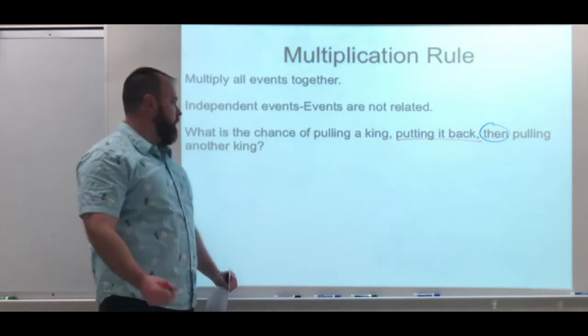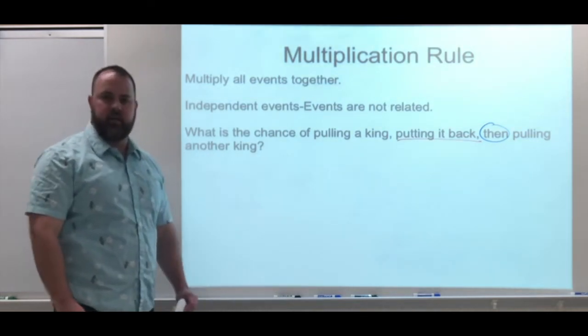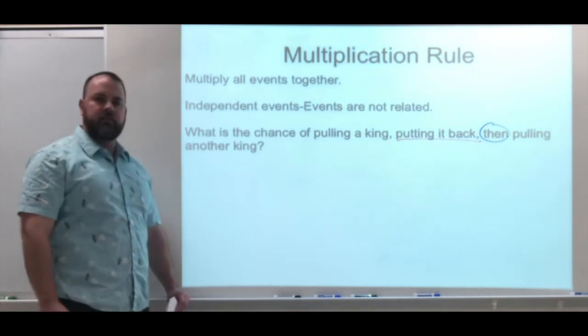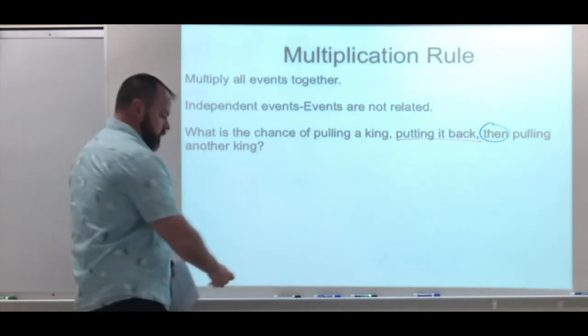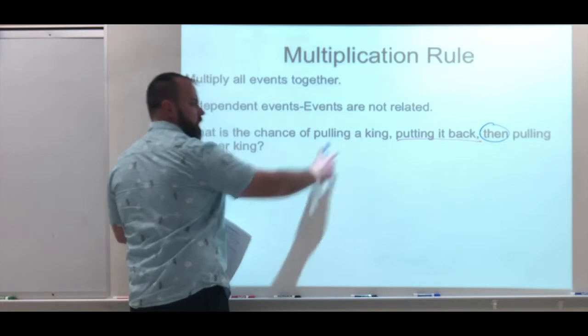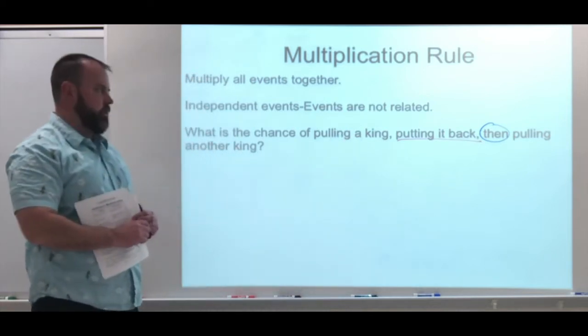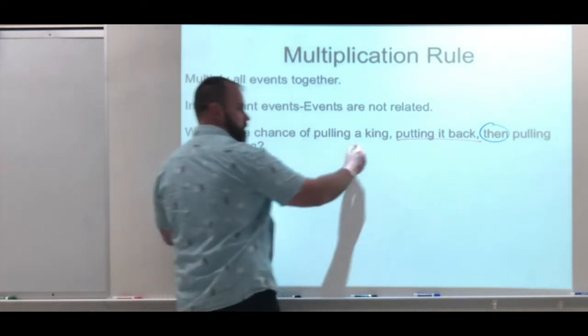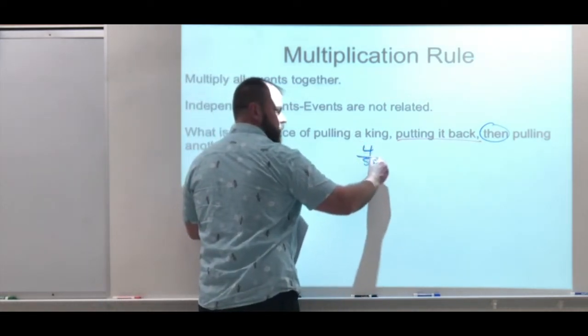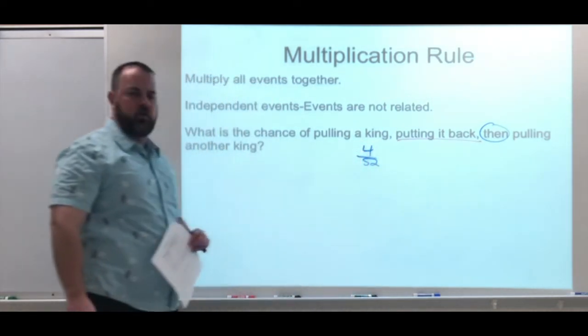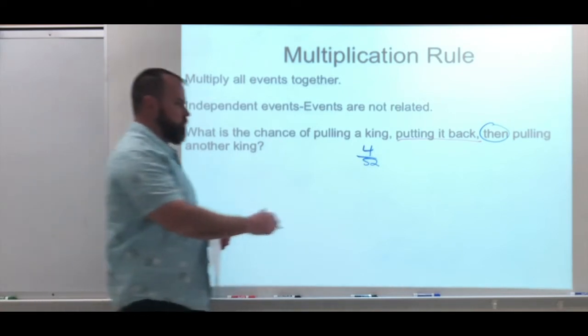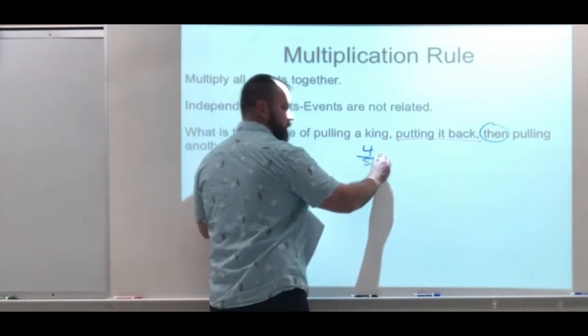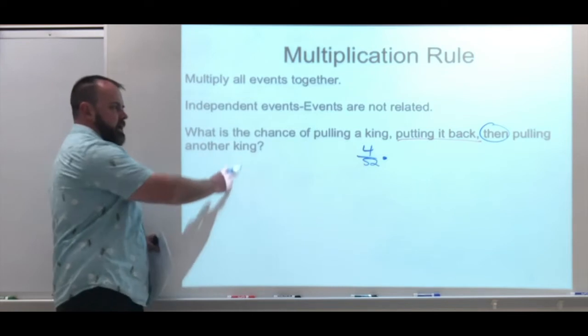You got a king the first time, you put it back in, there's four kings still in that deck. So this is going to be considered an independent event. So I'm going to look at my two events. We have pulling a king. So just like for the addition rule, I'm just going to set these up. Pulling a king is four out of 52. Four kings total of 52 cards in a deck. That means we're on multiply. And since I put that back,